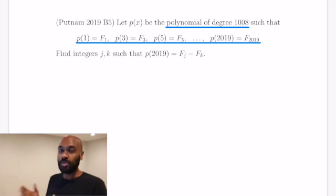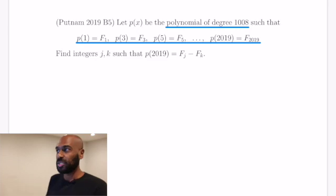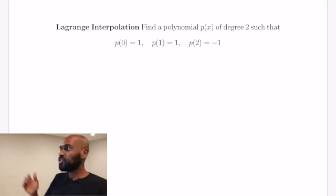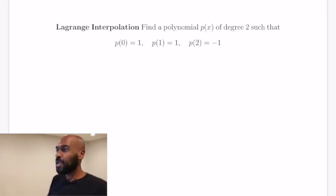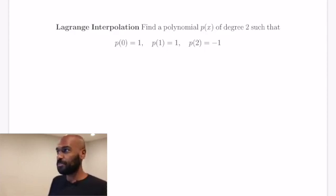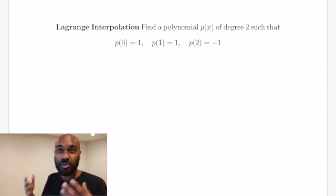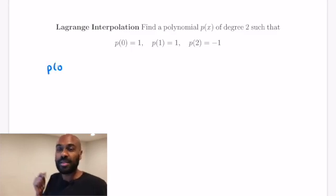To illustrate how Lagrange interpolation works, I want to start with a simpler example so you get a sense of how and why it works, and then apply it to the polynomial at hand. Let's say we wanted to find a polynomial of degree 2 — a quadratic — where P of 0 is 1, P of 1 is 1, and P of 2 is negative 1. We could just assume a generic quadratic and solve for the coefficients, but Lagrange interpolation gives us a really nice way to do it.